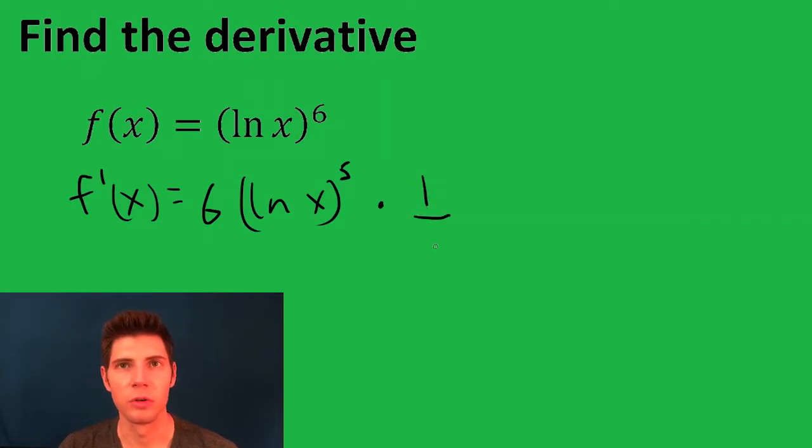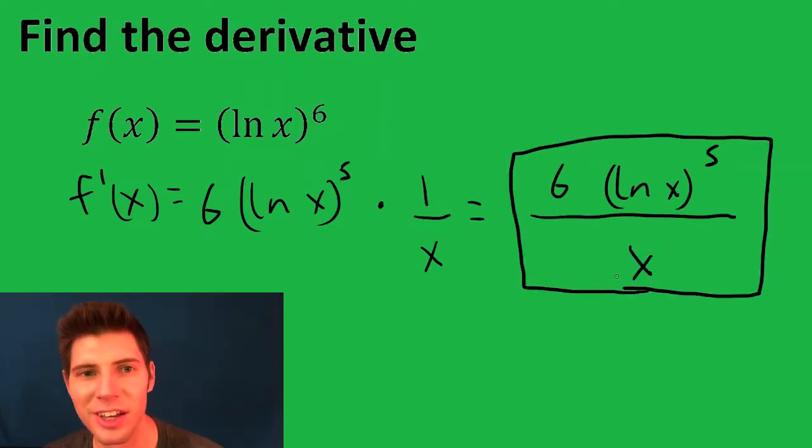Derivative of ln x is one over x. So this can be basically just combined: six ln x to the fifth over x. And that is the answer to the question.